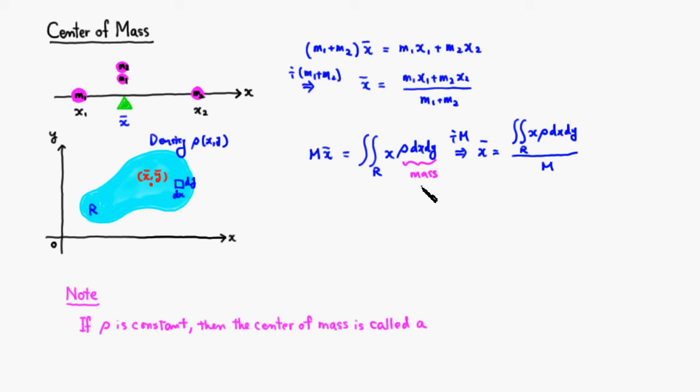We can do the same thing, and you can kind of guess what happens to the y-bar. So y-bar is going to be the integral over the region R of y times Rho dx dy all over the entire mass.